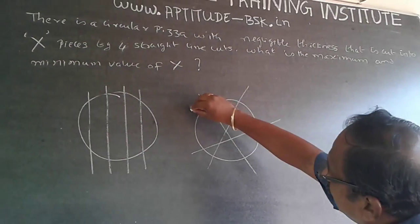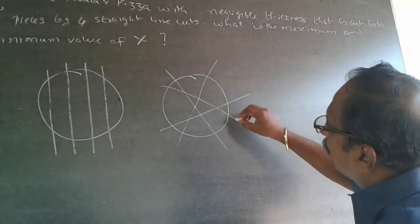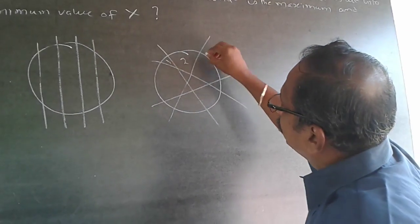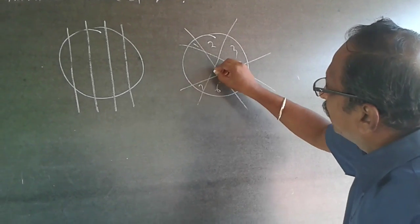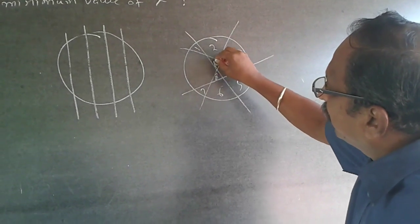The fourth cut will have to cut the 3 lines. So now the number of pieces will be 1, 2, 3, 4, 5, 6, 7, 8, 9, 10 and 11.